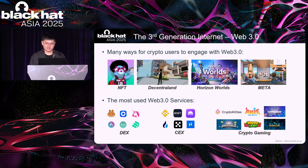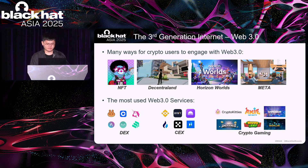In this part, I will mainly introduce the following questions: What is Web3? How can we get access to Web3? And what are the most used Web3 services? Web3, also called the third generation of the internet, is a paradigm shift which promises a decentralized future based on blockchain technology. There are many ways to access the Web3 ecosystem, for example NFT marketplaces, DeFi protocols such as DEX — decentralized exchanges — and Metaverse platforms such as Decentraland, Horizon Worlds, and Meta.